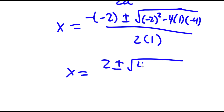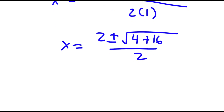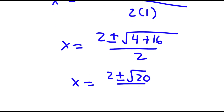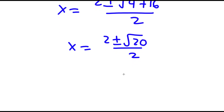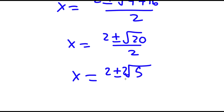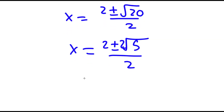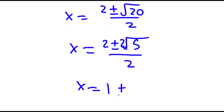This equals 2 plus or minus the square root of 4 minus negative 16, which is 4 plus 16, over 2. So this is equal to 2 plus or minus the square root of 20 over 2. The square root of 20 is the same as 2 root 5, so this simplifies to 1 plus or minus the square root of 5.